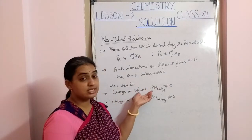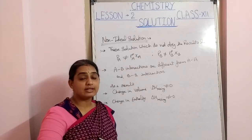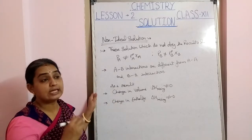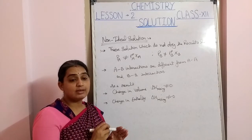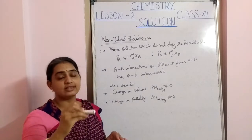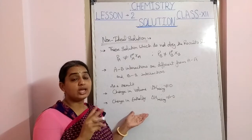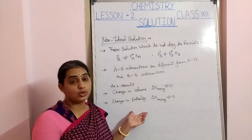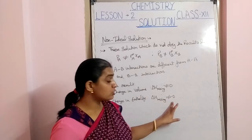The change in volume indicates the solution is non-ideal. The next condition is change in enthalpy. For non-ideal solutions, enthalpy also shows a change. There is a change in energy. For ideal solutions, enthalpy has no change, but for non-ideal solutions it will change — delta V is not equal to zero and delta H is also not equal to zero.